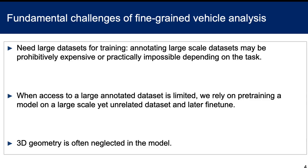We need a model that can generalize well and be able to detect parts of vehicles. To solve these problems, one will have to collect sufficiently large and diverse datasets to train these models. However, annotating large-scale datasets may be expensive and sometimes even impossible. When access to a large annotated dataset is limited, practitioners typically rely on pre-training a deep model on some large-scale but unrelated datasets such as ImageNet, and later fine-tune the poorly initialized model using a small set of annotated samples from the target domain. Our experiments show that this standard practice often leads to models with suboptimal performance.